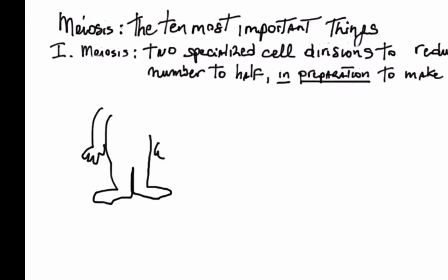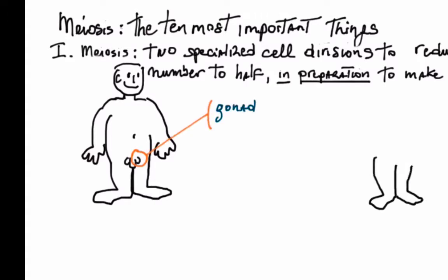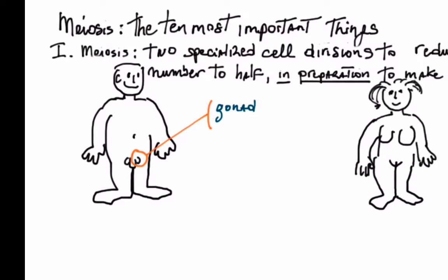Let's consider a few life cycles to make the point. We're going to start with humans. Here is a human male and his gonads, and here is a human female and her gonads. In the first case, the testicles. In the second case, the ovaries.